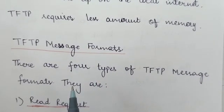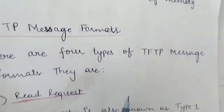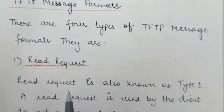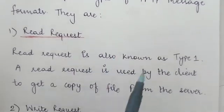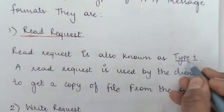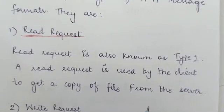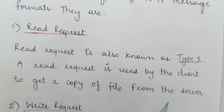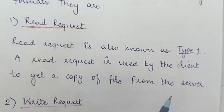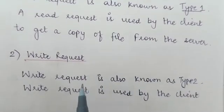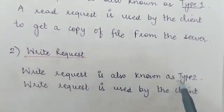Now let's look at the TFTP message format. There are four types of TFTP message formats. The first one is the Read Request, also known as Type 1. A read request is used by the client to get a copy of a file from the server — whenever a client wants to read a file from the server, a read request is used.